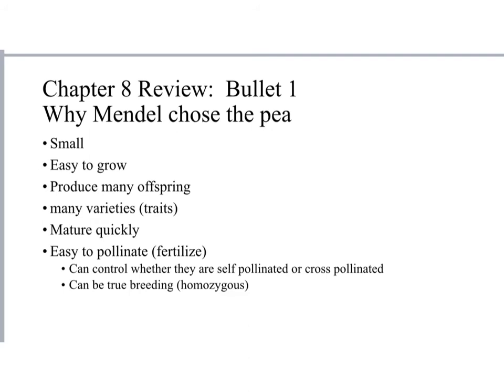Moving on to chapter 8: why did Mendel choose the pea? They were small, easy to grow, produced many offspring, had many visible varieties or traits, matured quickly, and were easy to pollinate or fertilize — they could be self-pollinated or cross-pollinated, and Mendel could control which. Peas can also be true-breeding, meaning they are homozygous and produce only the same type of offspring.